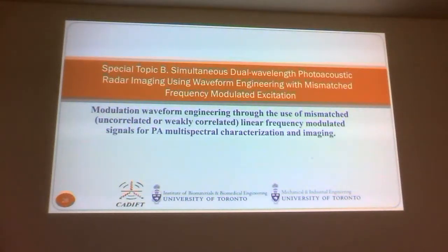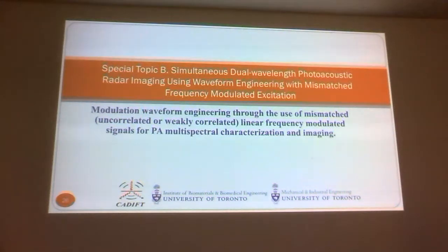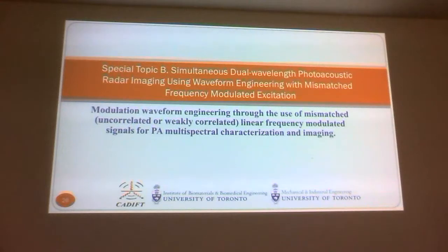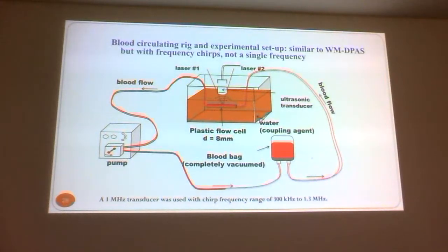The second concept is waveform engineering beyond what was said before — introducing uncorrelated chirps. Sometimes you want multispectral imaging, but in most cases multispectral means you take one spectrum and go to the next, switching wavelength from one to the other. This method allows you to go in and look at different wavelengths at the same time, provided you have produced linearly independent signals from chirps that come in at different times and different angles. Here are two mismatched chirps: one going up and the other going down — one laser up, the other laser down.